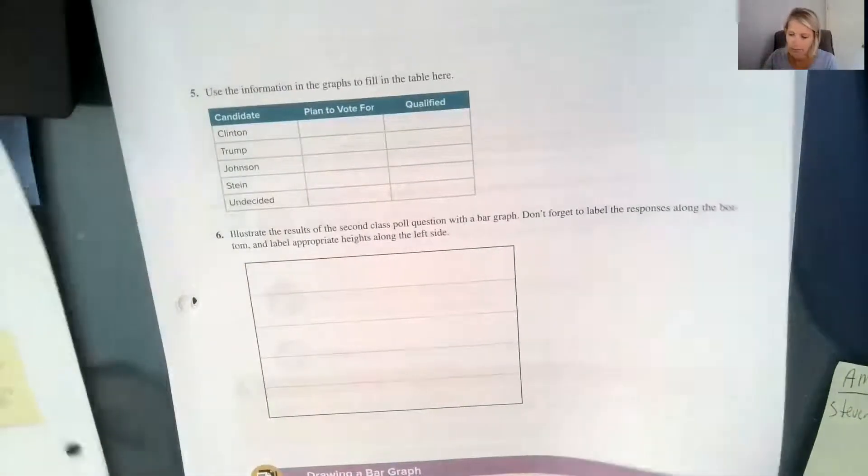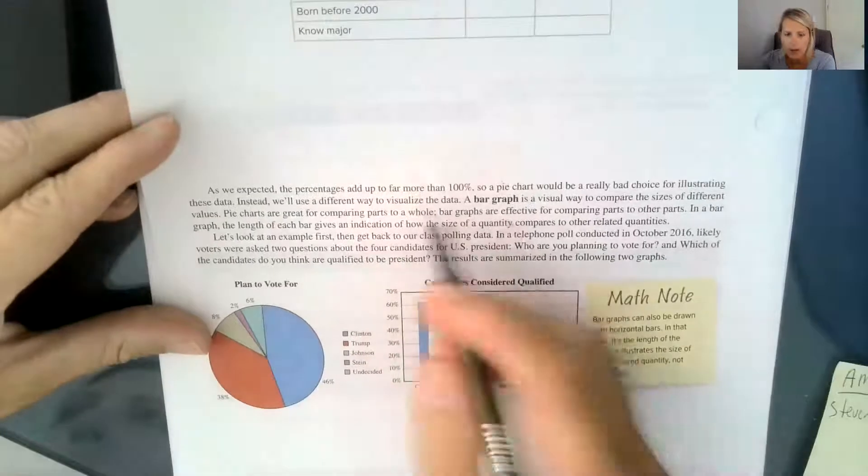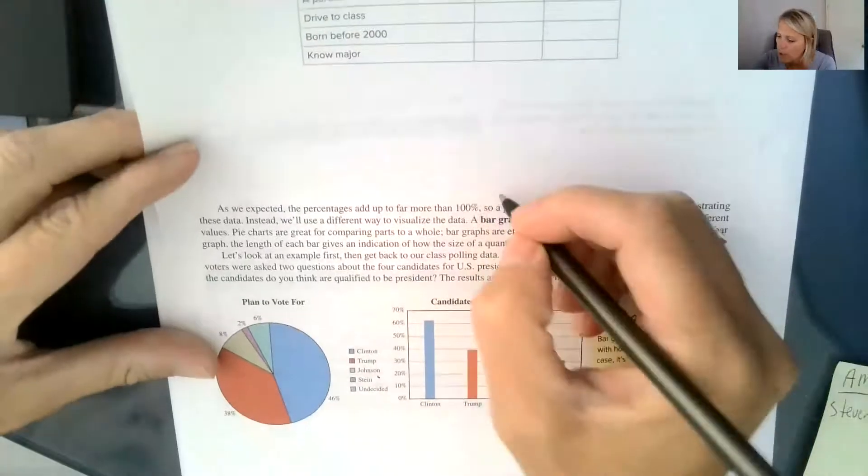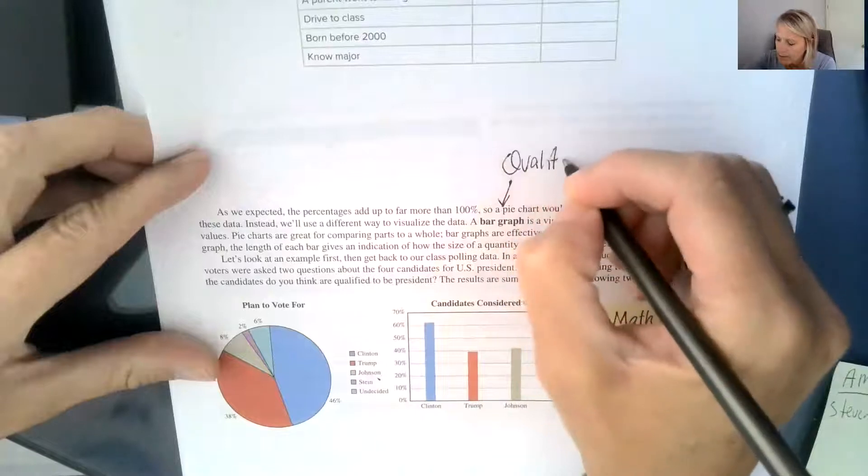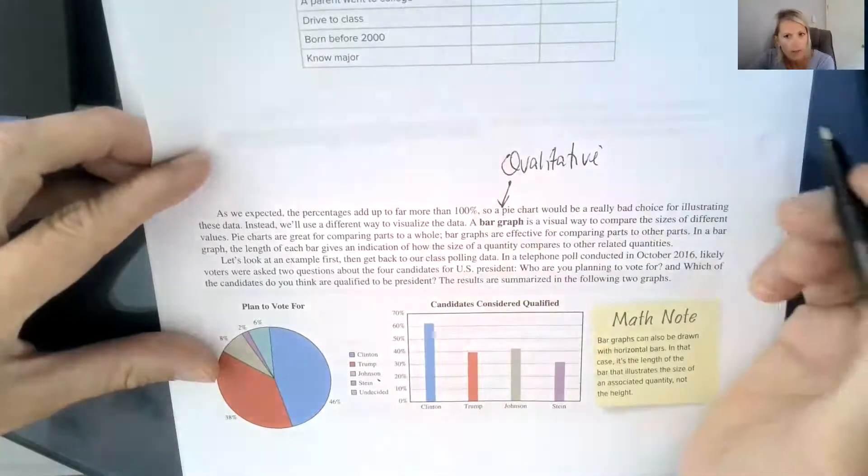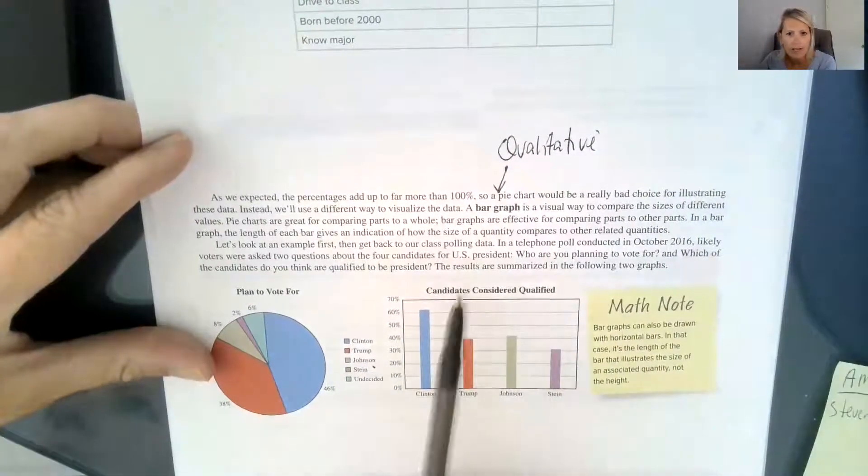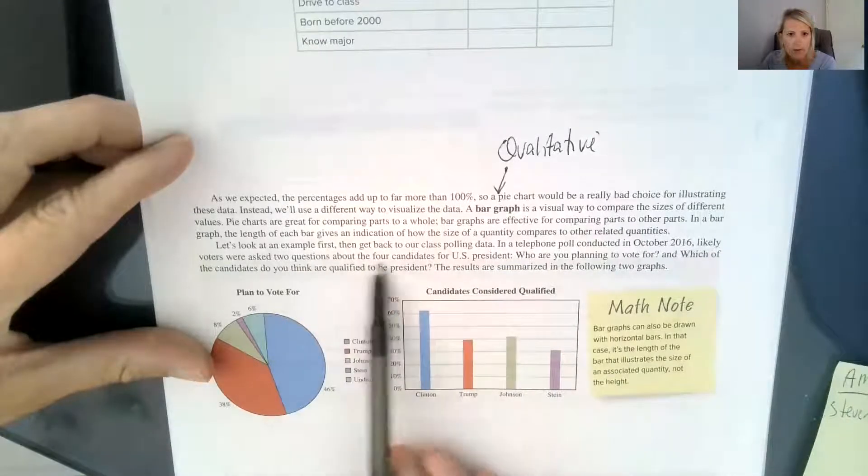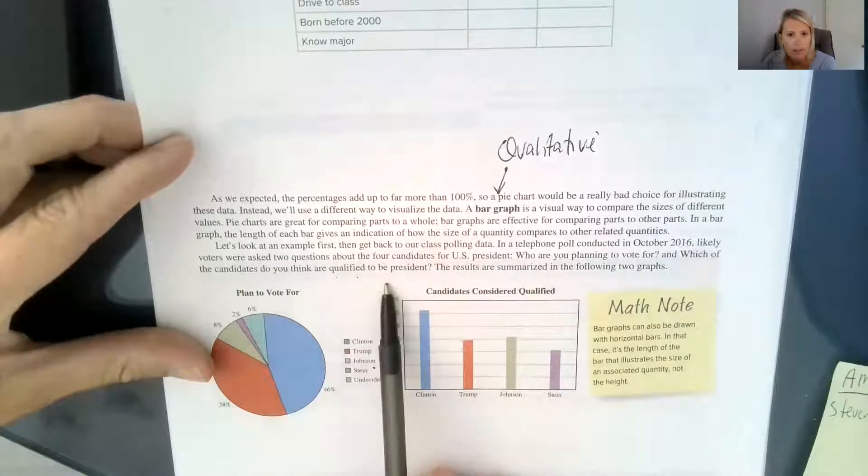The rest of this section is all about reading some graphs, and a graph that we're going to learn how to read here is a bar graph. A bar graph and a pie graph are both used for qualitative data. So data that is not numerical and doesn't have to go in an order. So this was asking, they asked a question of likely voters in 2016 were asked two questions about the four candidates for U.S. president. Who are you planning to vote for, and which of the candidates do you think are qualified to be president?